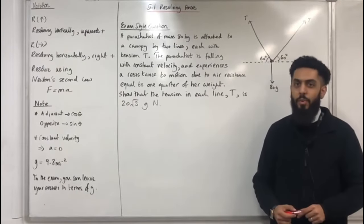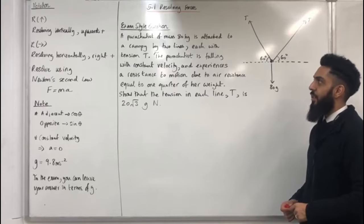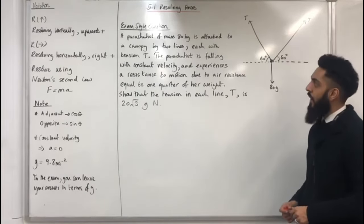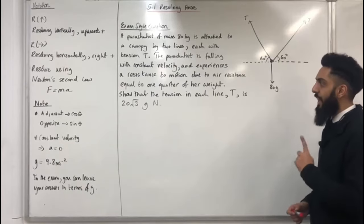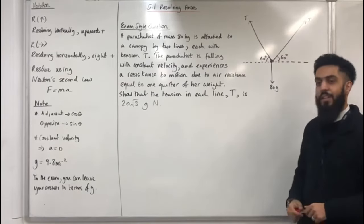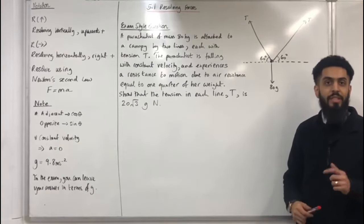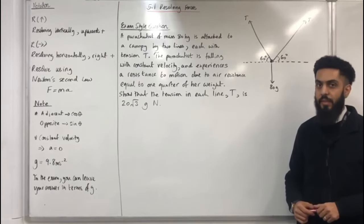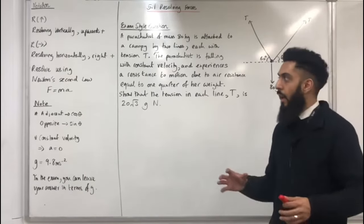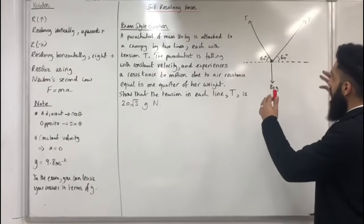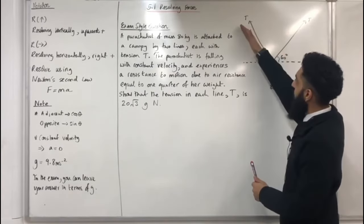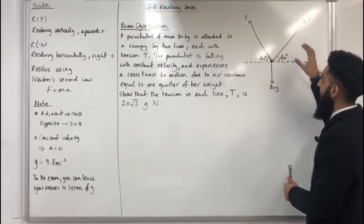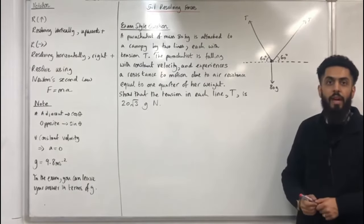Here is another exam-style question. A parachutist of mass 80 kg is attached to a canopy by two lines, each with tension T. The parachutist is falling with constant velocity and experiences air resistance equal to one quarter of the weight. We need to show that the tension in each line T is 20 root 3 G Newtons, where G is 9.8 metres per second per second. Before tackling this, we need to label all forces on the parachutist. We have a tension T on each side, and for each tension we need to form a right-angle triangle to find component forces.